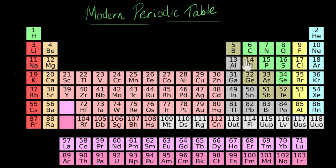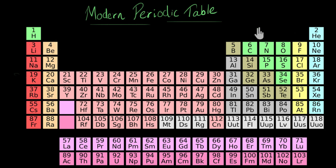There is one limitation still not solved by the modern periodic table: the position of hydrogen. Even in the old periodic table we were not sure where to place it, because hydrogen shows some chemical properties similar to group 1 elements and some similar to group 17 elements, yet it is different from both. We still don't have a definitive answer. Some people place it in group 1 because hydrogen has one valence electron, just like group 1 elements.